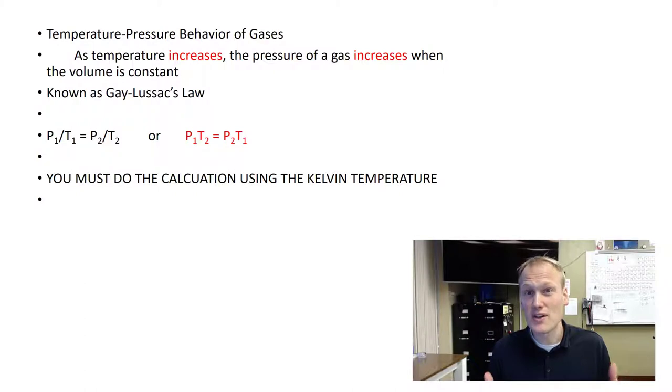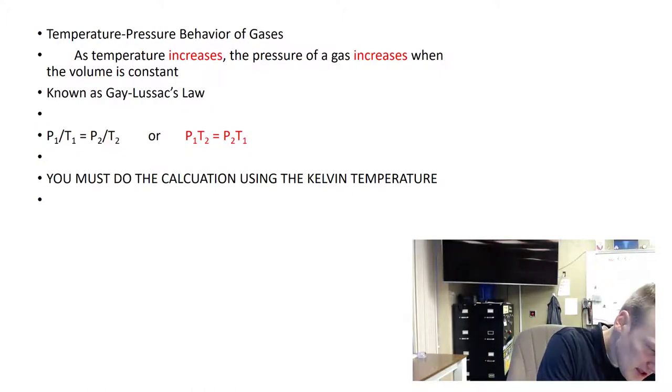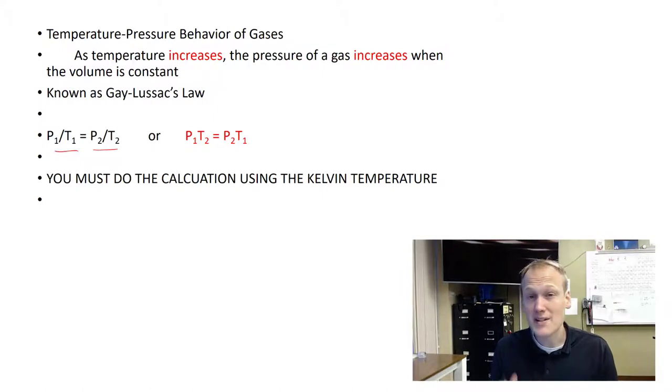This is why in chemistry lab we don't heat in closed containers. You can see that like volume and temperature this is a direct relationship. So P1 over T1 equals P2 over T2. Remember temperature is involved so you must convert everything into Kelvin if you're given a temperature.